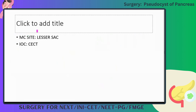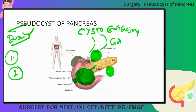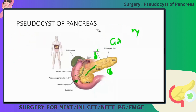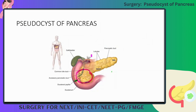The most common site is the lesser sac. A pseudocyst of the pancreas is nothing but a walled collection which is not infected. It can lie in the head, body, or tail. It has a direct connection from the pancreas containing all the important enzymes. It is always worthwhile to drain it into the abdomen so that it will be helpful in digestion.